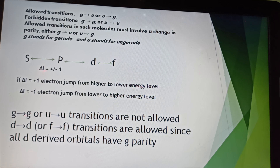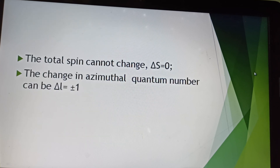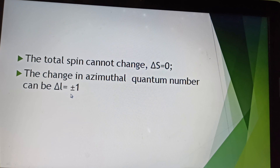We can write ΔL = ±1. If ΔL is equal to +1, the electron jumps from a lower to a higher energy level. If ΔL is equal to −1, the electron jumps from a higher to a lower energy level. In this way, we have discussed the spin selection rule and the Laporte rule. The total spin cannot be changed, so ΔS = 0, and the change in azimuthal quantum number is ΔL = ±1. That concludes the discussion about the selection rule.